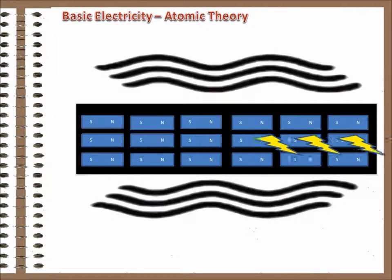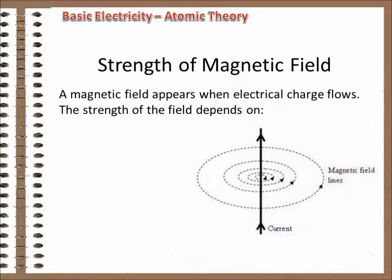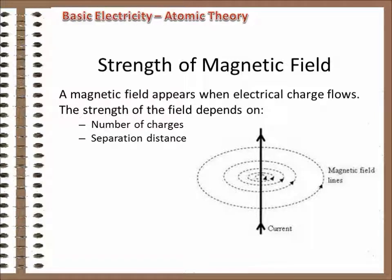So by making charge move, we can heat things and create a force that can move objects. So anytime that an electrical charge is flowing, a magnetic field surrounds it. The strength of the field depends on the number of charges flowing and the separation distance, that square of the distance thing again.